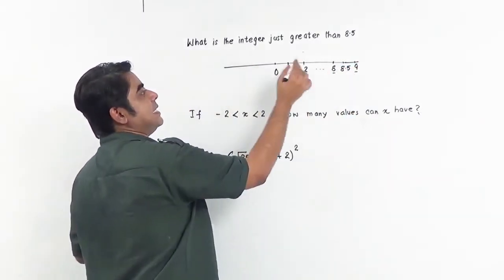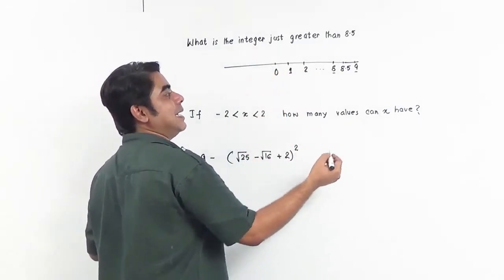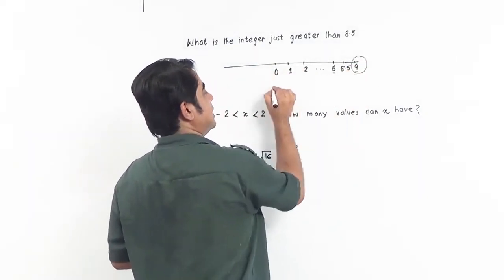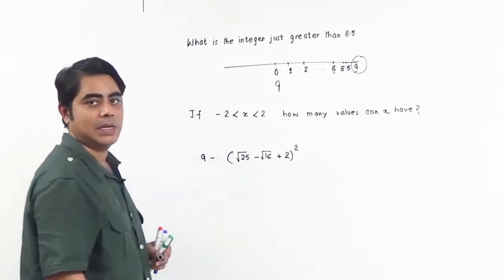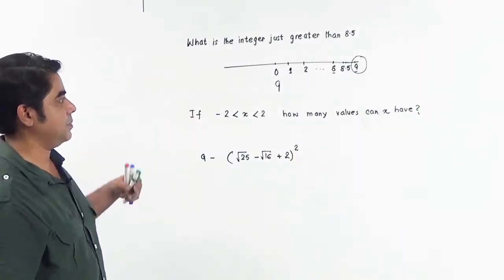So the integer that is just greater than 8.5 is 9. That's right, so I hope this is clear.